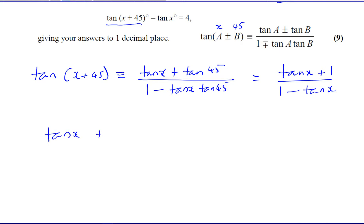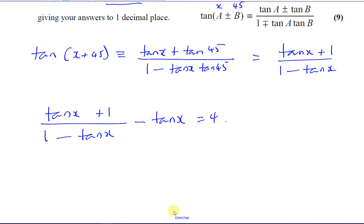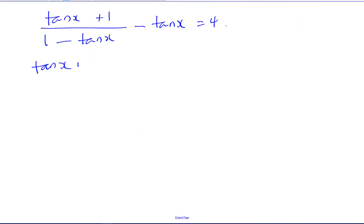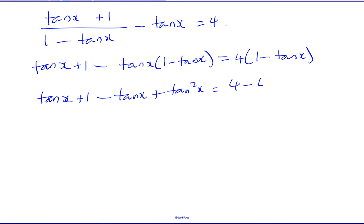So we have (tan(x) + 1) / (1 − tan(x)) minus tan(x) equals 4. What we do is multiply both sides by (1 − tan(x)) to get rid of the fraction. We have to multiply every term by it, giving us: tan(x) + 1 minus tan(x)·(1 − tan(x)) equals 4·(1 − tan(x)). Expanding, we get tan(x) + 1 − tan(x) + tan²(x) equals 4 − 4tan(x).